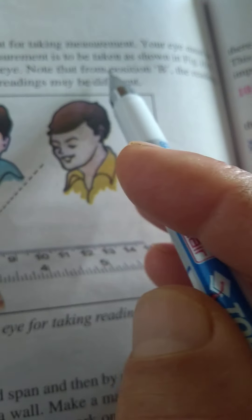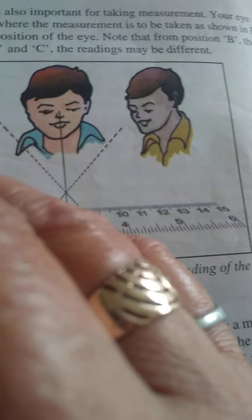Note that from position B, the reading is 7.5 cm. From position A and C, the reading may be different.